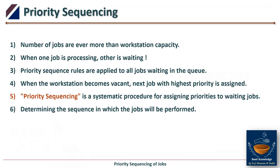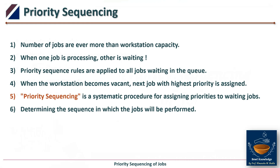What is priority sequencing? In operations management, the number of jobs is always more than the workstation capacity. When one job is processing, others are waiting. Priority sequence rules are applied to all jobs waiting in the queue, so when the workstation becomes vacant, the next job with the highest priority is assigned. Priority sequencing is a systematic procedure for assigning priorities to waiting jobs and determining the sequence in which jobs will be performed.